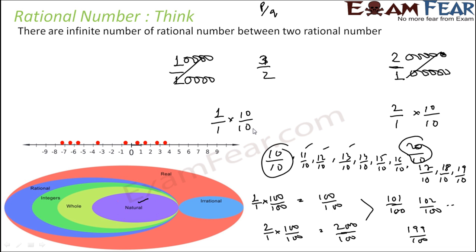So we conclude that between any two rational numbers there are infinite rational numbers. We took the example of 1 and 2 and showed that multiplying by 10 by 10 gives many rational numbers, multiplying by 100 by 100 gives more, and multiplying by 1000 by 1000 gives even more. You can multiply by any number — even 100,000 by 100,000.